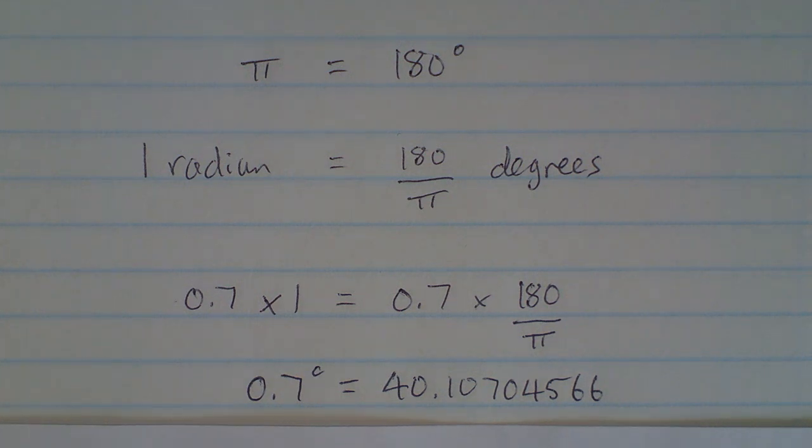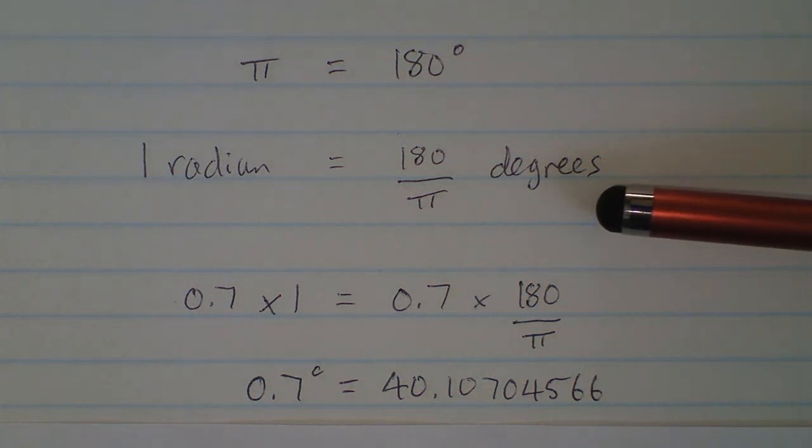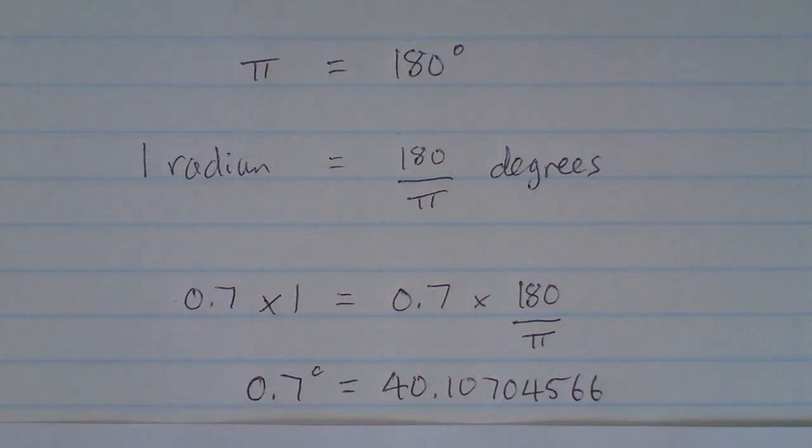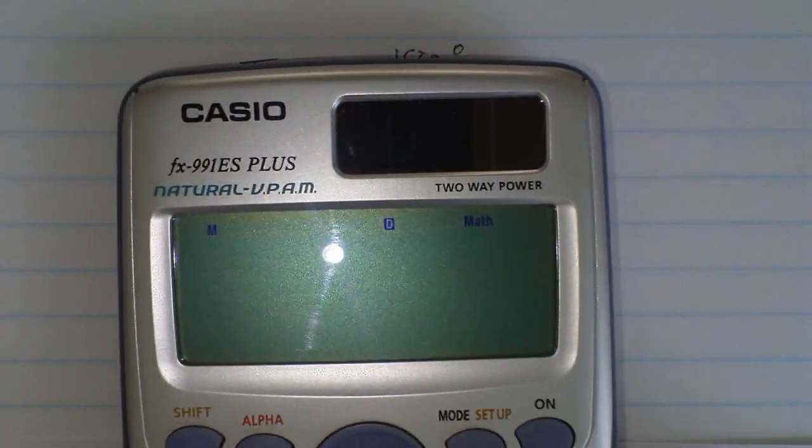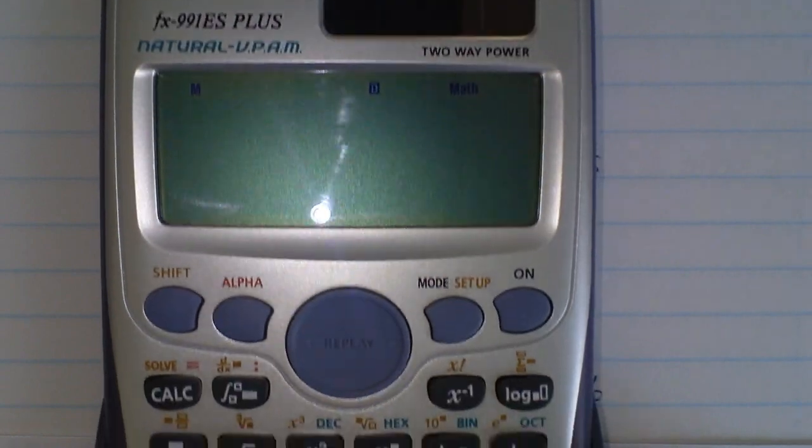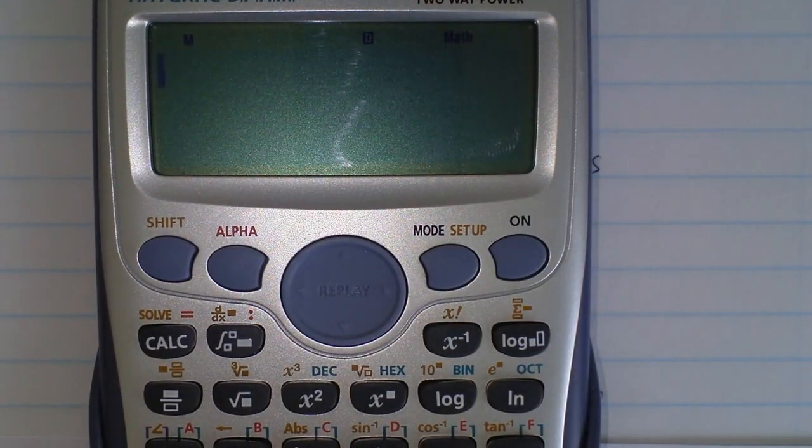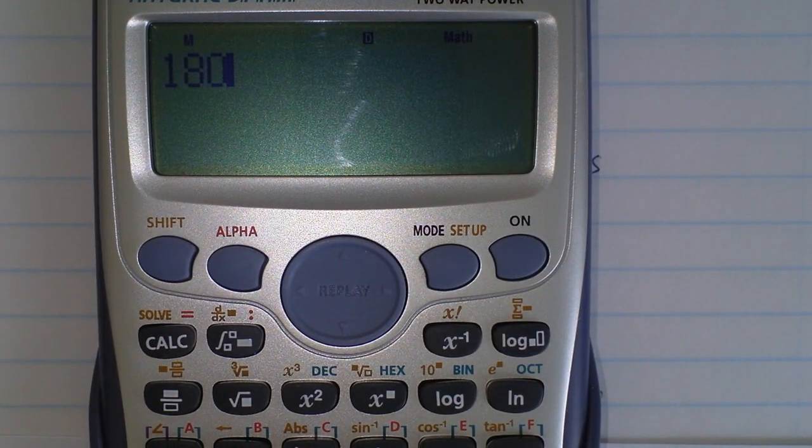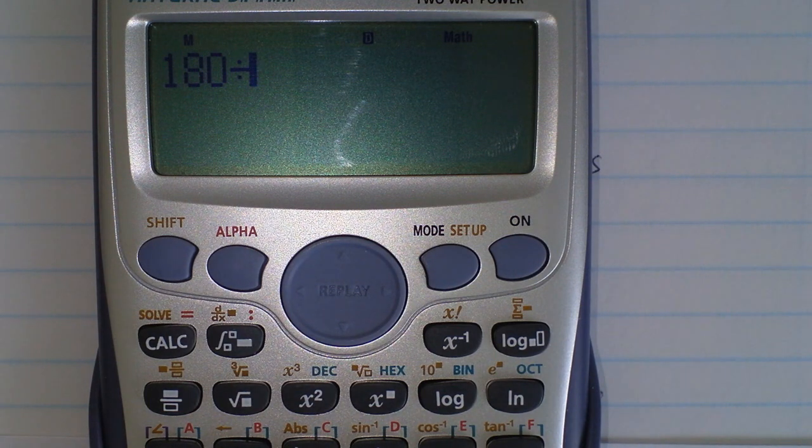Now you can use the calculator and you can put this into memory—so that's 180 divided by π being for one radian. On the calculator just have 180 divided by π, equals.